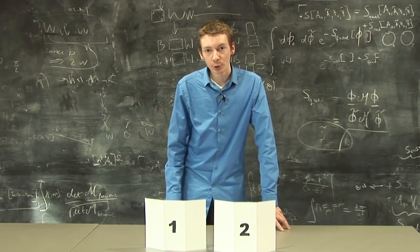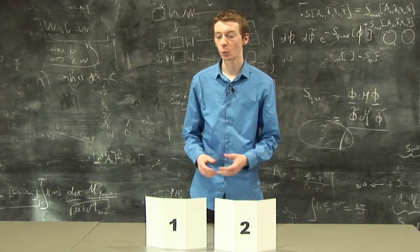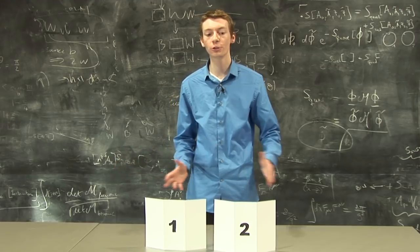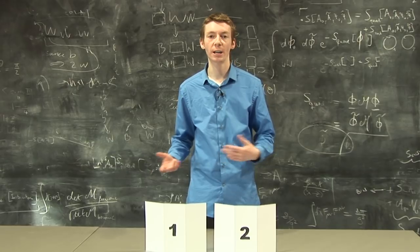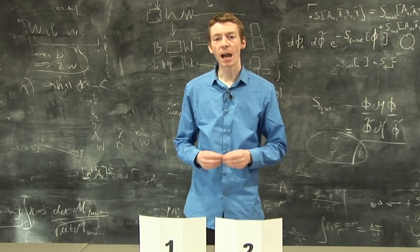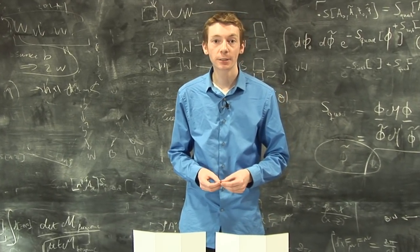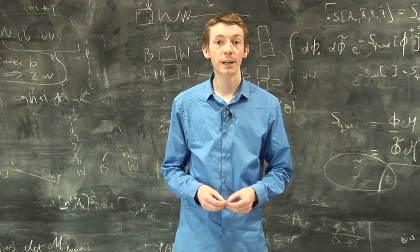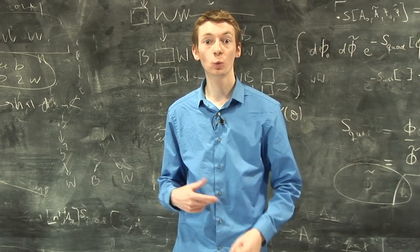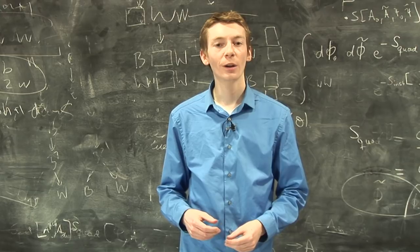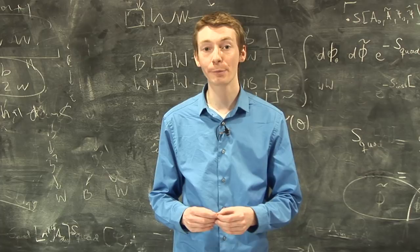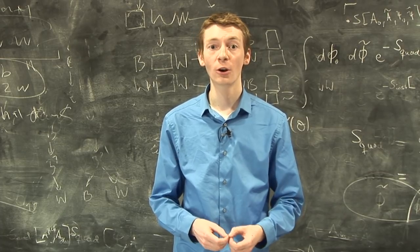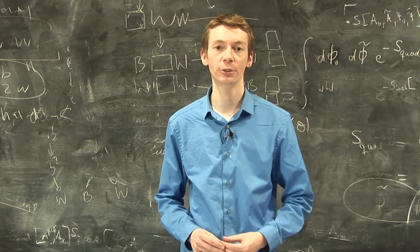A quick appeal to intuition might be to imagine 100 doors. So I've got 100 doors, and I'm going to ask you to pick a number between 1 and 100. Then I'm going to open 98 of those doors, leaving the door you picked and one other door. Now, how likely were you to pick the right door to begin with? Do you think it's more likely to be behind your door or the other door that I left unopened?